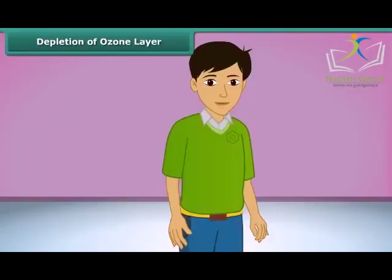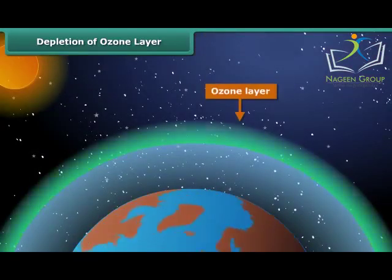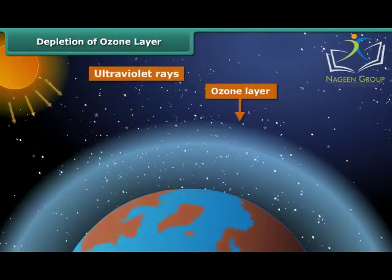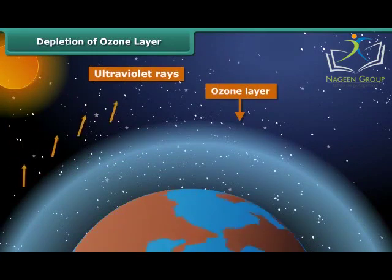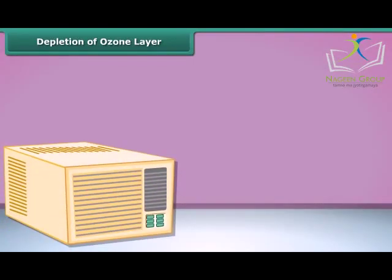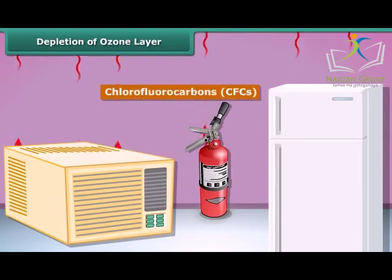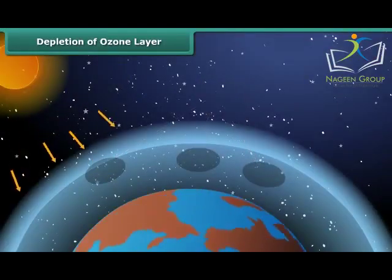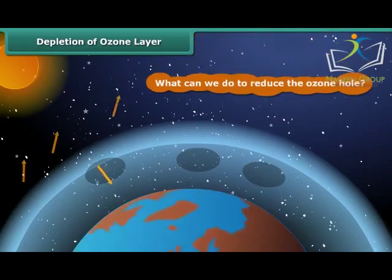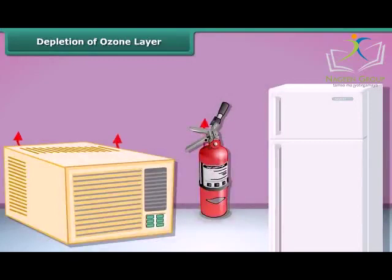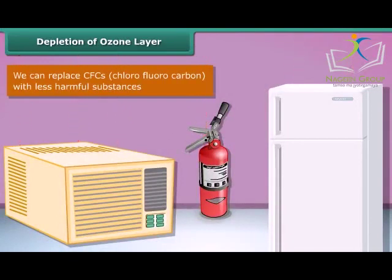Let us learn about the ozone layer. It is a layer of ozone gas in the upper atmosphere of Earth. It protects us from harmful ultraviolet rays of the sun. Things like air conditioners, refrigerators, and fire extinguishers release chlorofluorocarbons, CFCs, into the atmosphere and create holes in the ozone layer. CFCs are another type of air pollutant. To reduce the ozone hole, we can replace CFCs with less harmful substances to save the ozone layer from depletion.